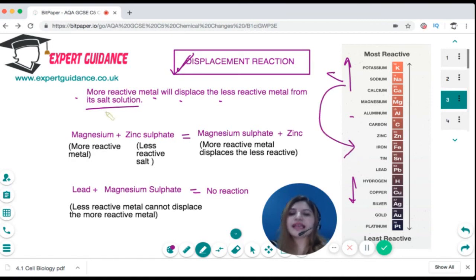So the metal at the top will displace the metal at the bottom from its salt solution. For example, magnesium and zinc sulfate - so magnesium is here and zinc is here, so magnesium being more reactive will displace or take the position of zinc in its compound and will form magnesium sulfate and displace the zinc.